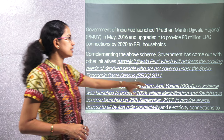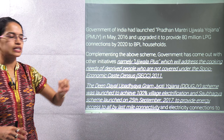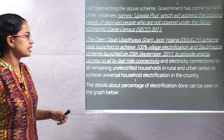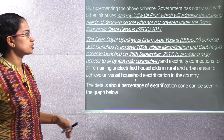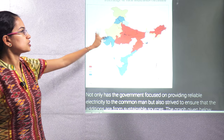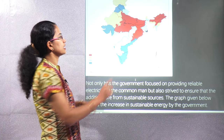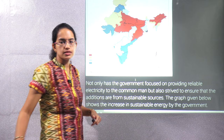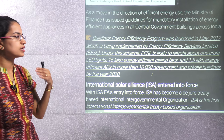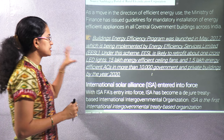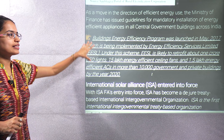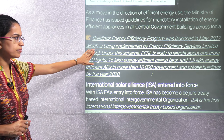The Ujjwala Plus scheme addresses cooking needs of deprived people not covered under the Socio-Economic Caste Census. The Deen Dayal Upadhyaya Gram Jyoti Yojana talks about 100% village electrification. The Saubhagya scheme provides last-mile connectivity. The worst electrification picture has been in the northeast and UP-Bihar regions. The Building Energy Efficiency Program and Energy Efficiency Services Limited are implementing energy-efficient ceiling fans and ACs in government and private organizations.